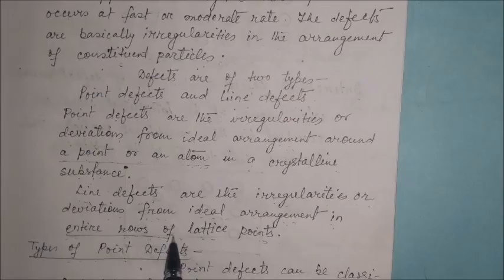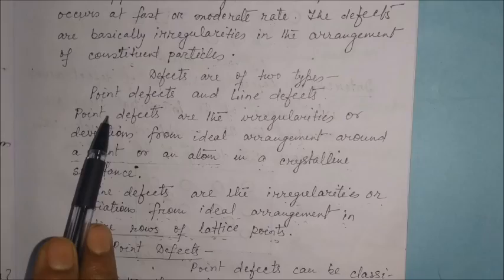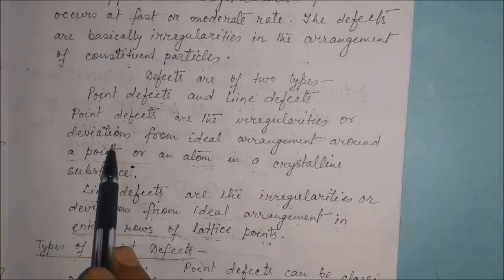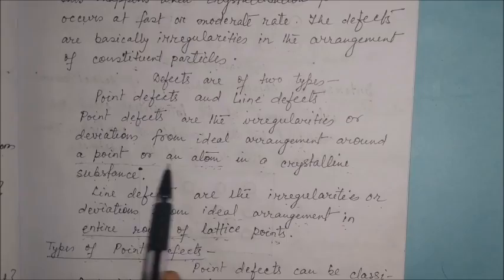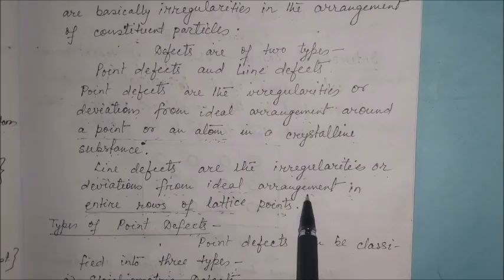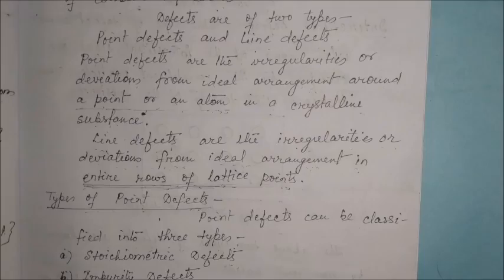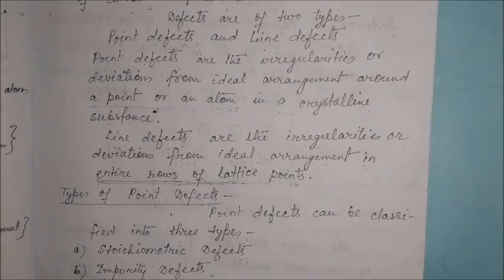The difference between these two is: point defects are related to irregularities around a point or an atom, whereas line defects involve irregularities in entire rows of lattice points. We will focus our study on point defects because it is in our syllabus.